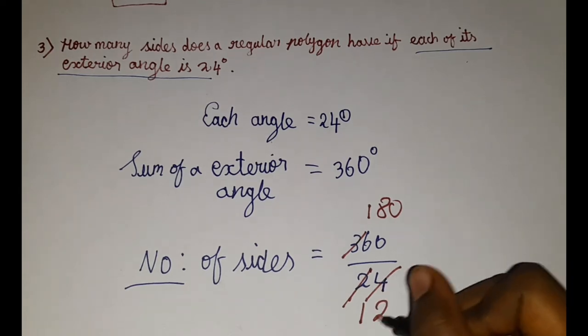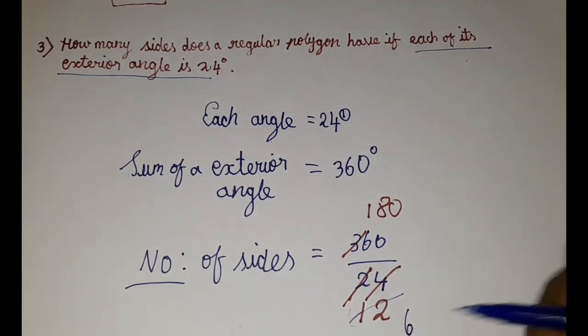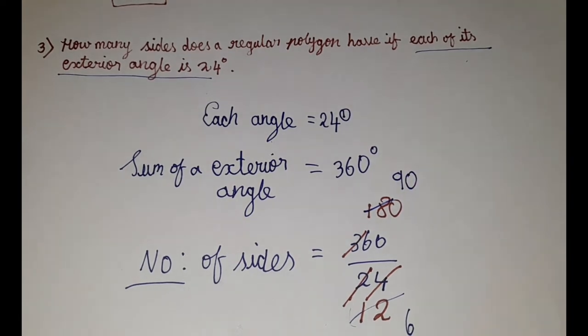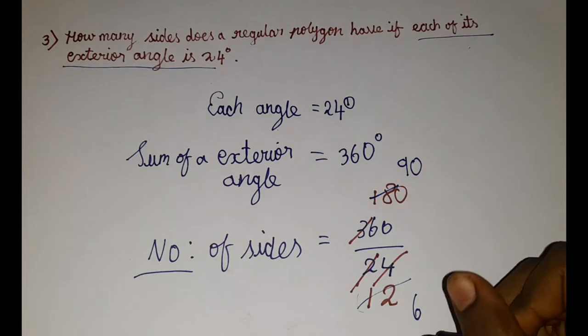So 6 twos are 12. Let me cancel. 6 twos are 12. 9 twos are 18. And 0 here. So now we shall again cancel it because we can cancel it.